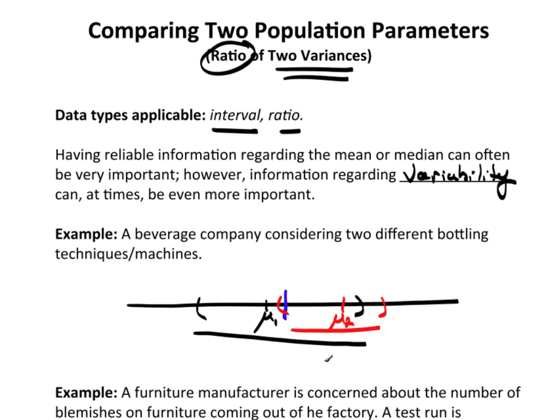With this variability clearly being smaller than this variability. So under those conditions, perhaps the second process, represented by mu2, is more desirable. But you would never know that if you didn't look at the variability.